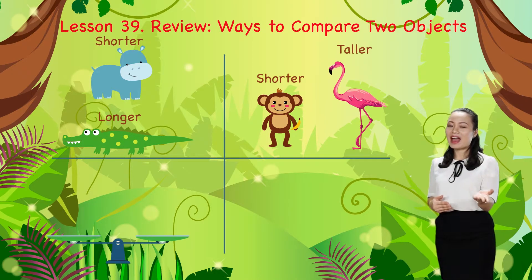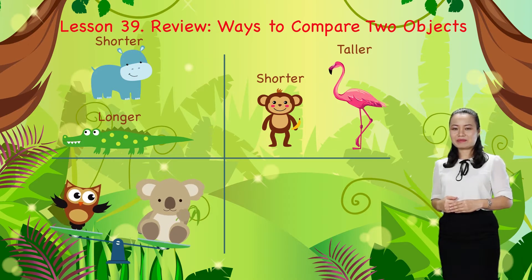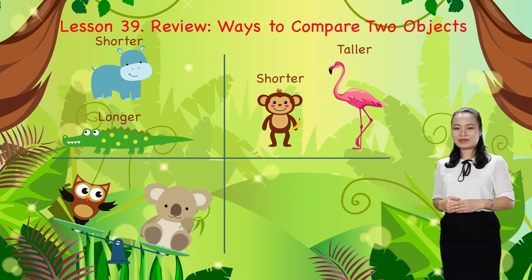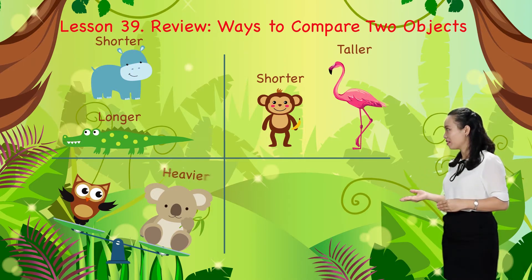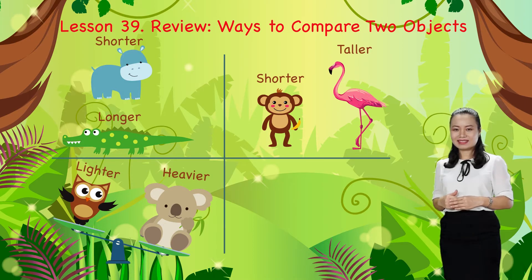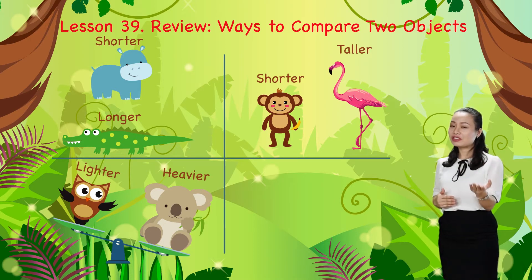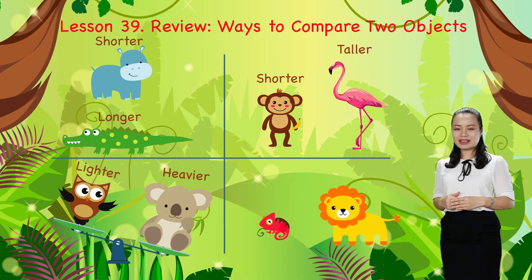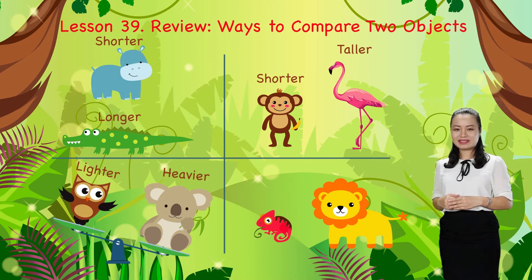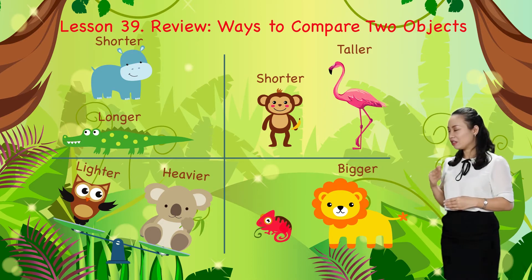To compare two objects based on their weight, we say heavier or lighter. To compare two objects based on their sizes, we say bigger or smaller.